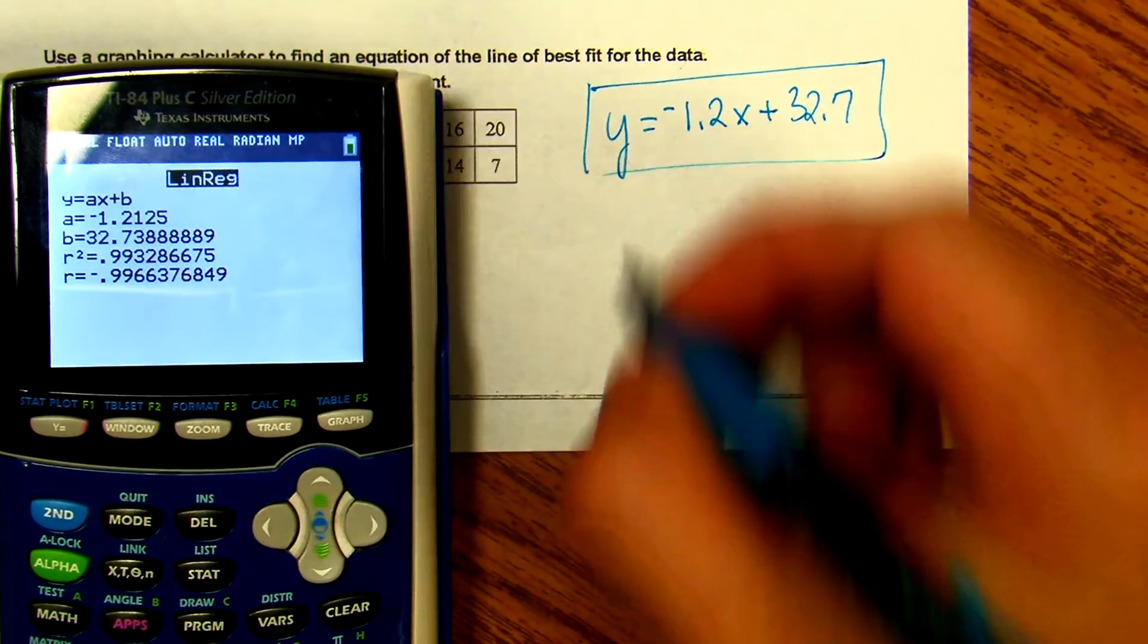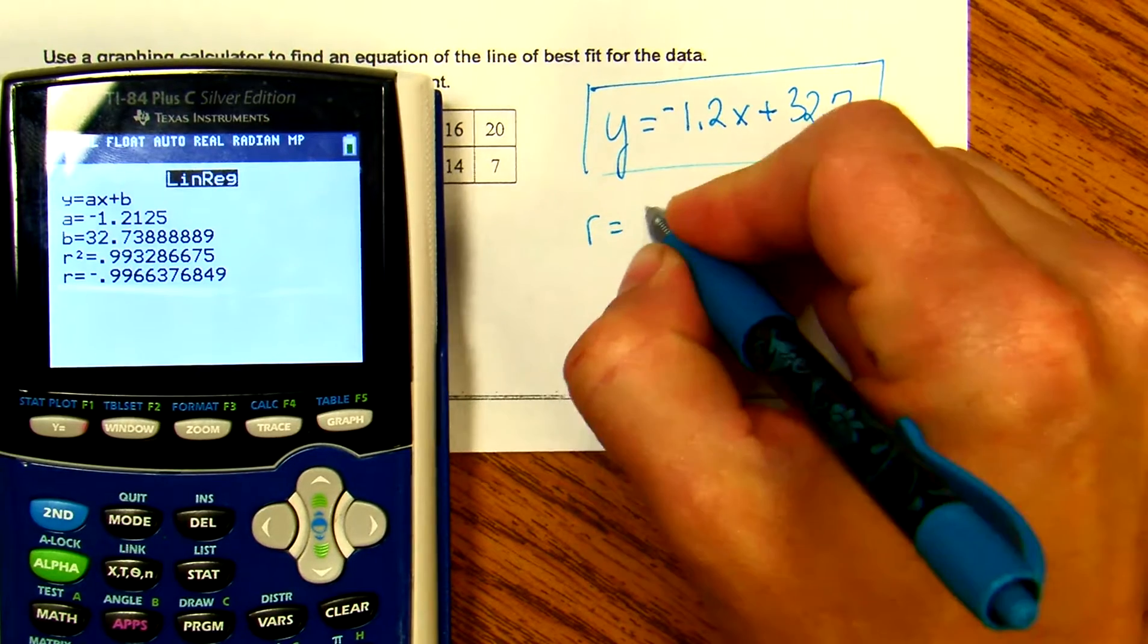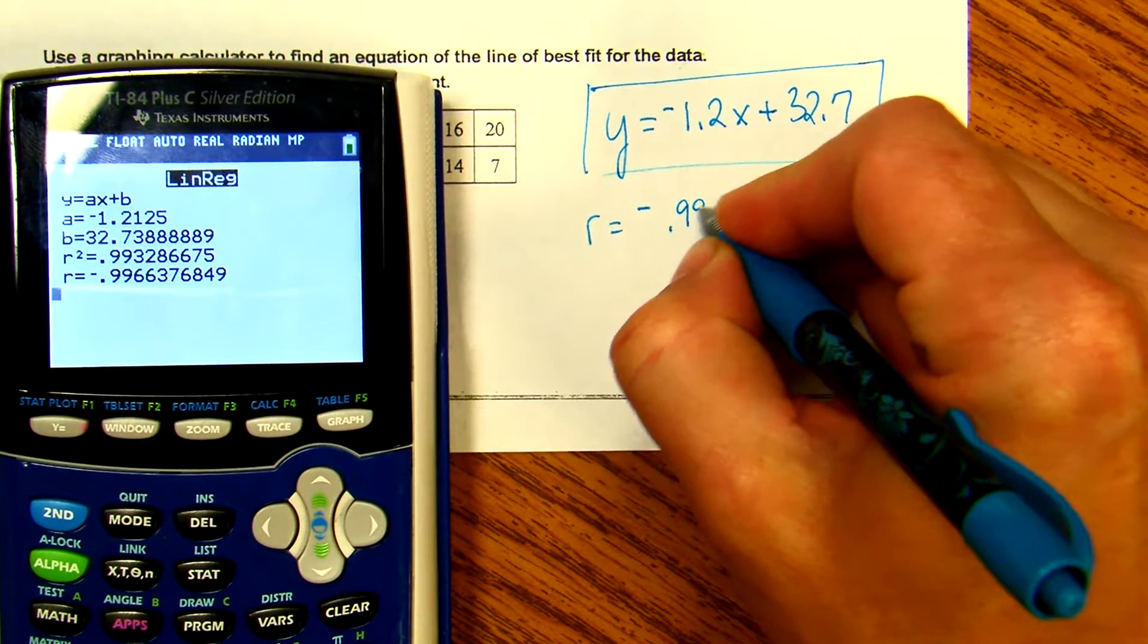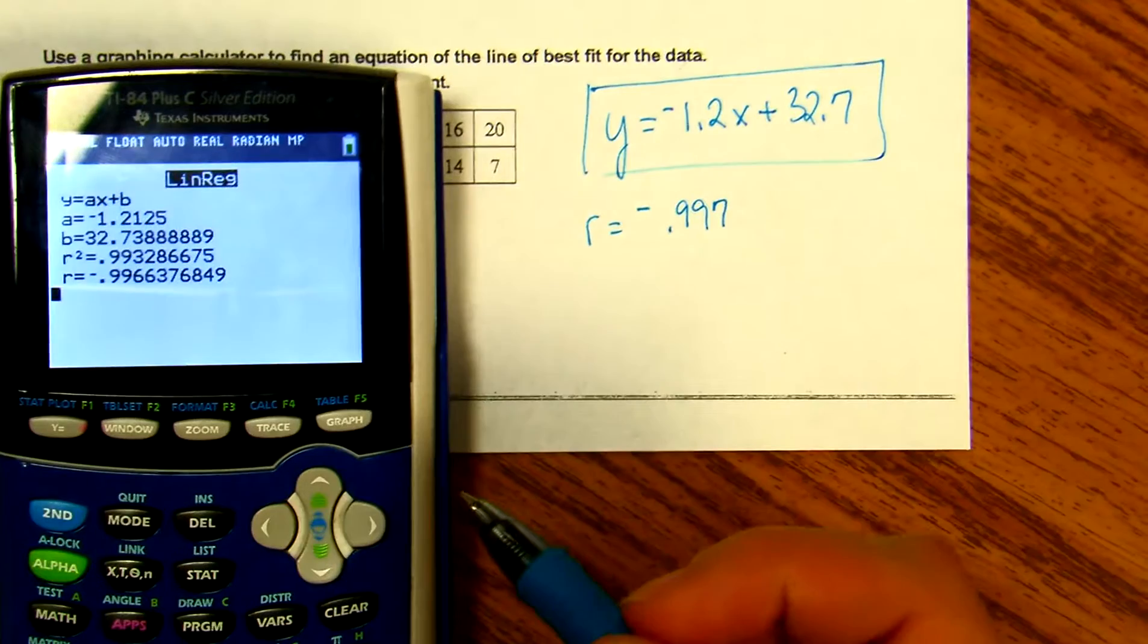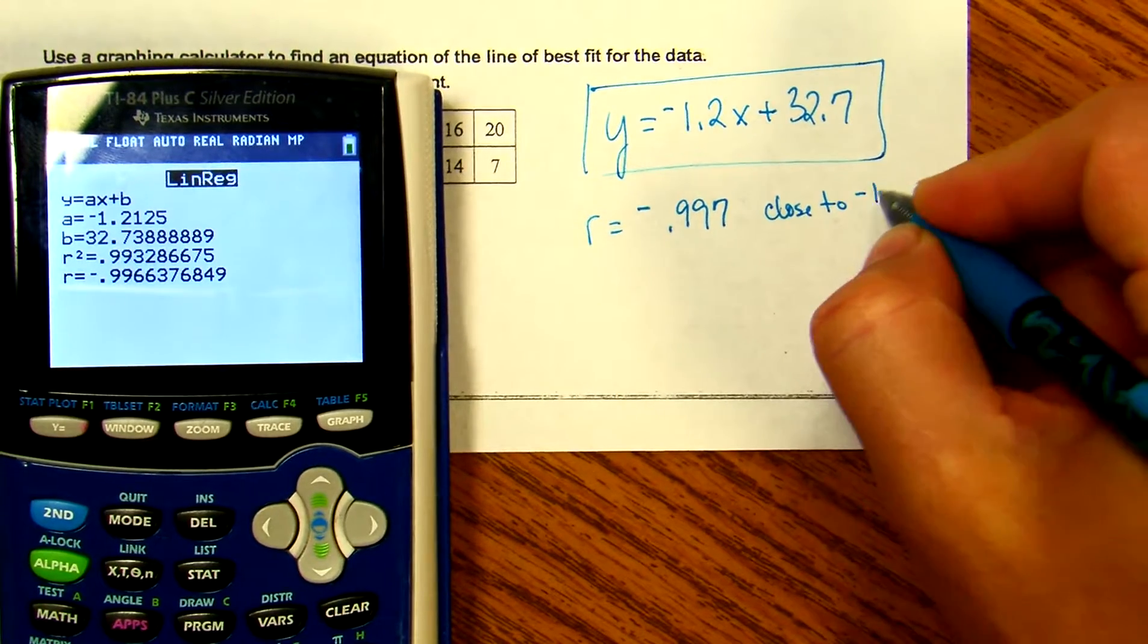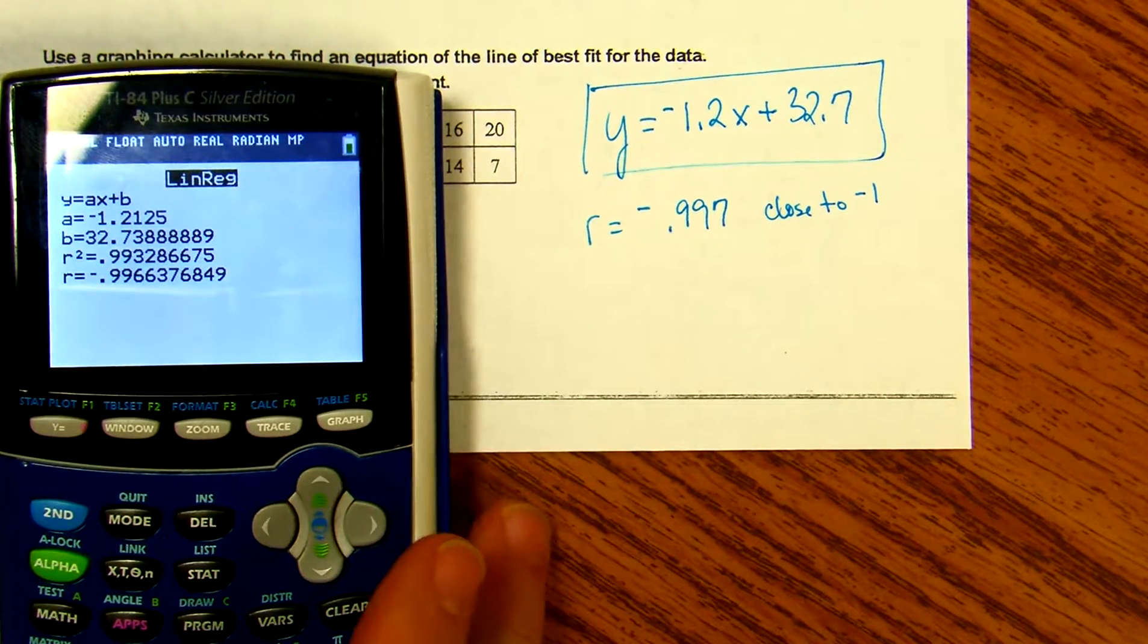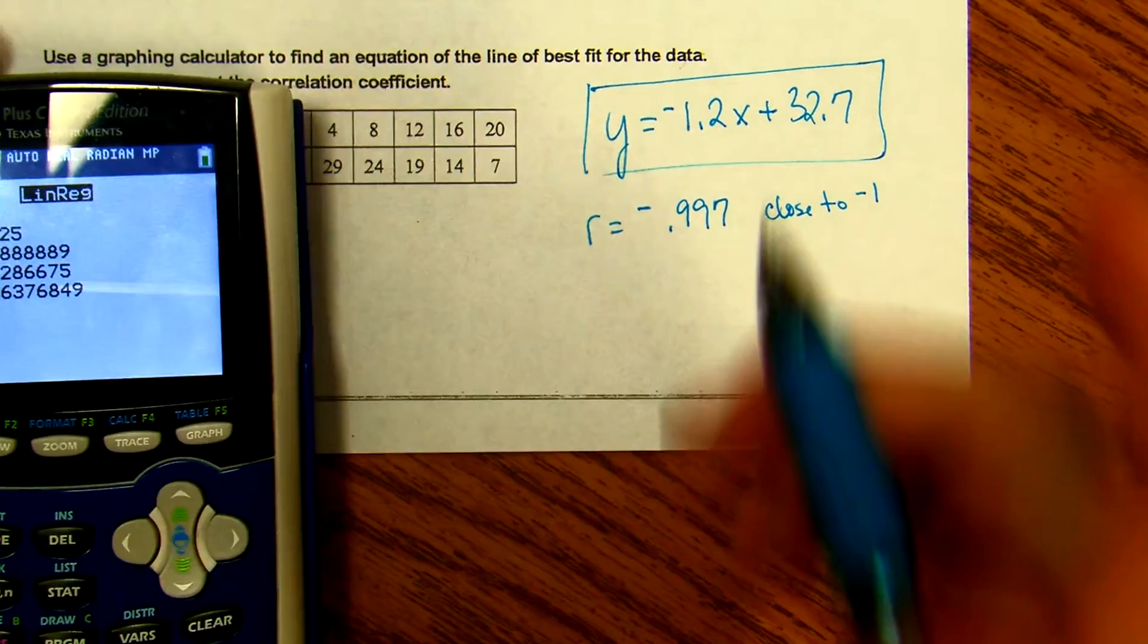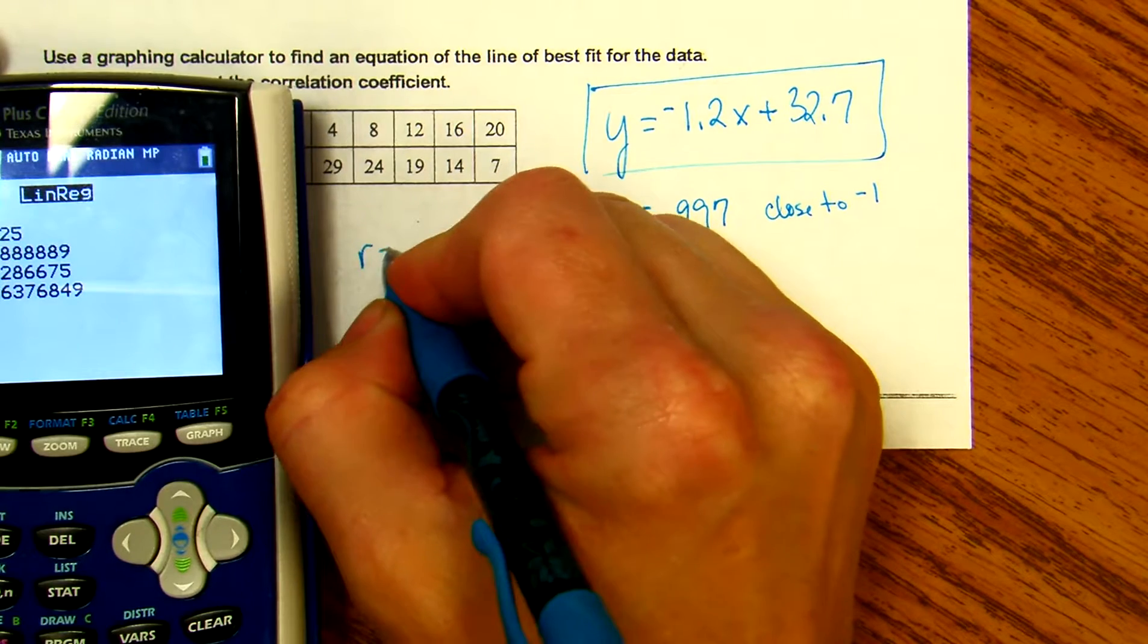Now we talked about this before - if r is negative one, it's a strong negative correlation. If it's close to positive one, it's a strong positive correlation.